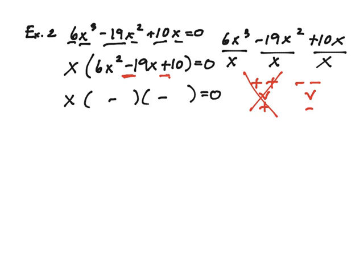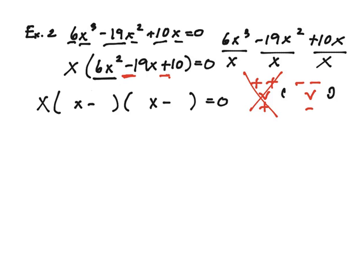So I have two negatives. Now let's look at 6x squared. Let's go ahead and split that x. I have a feeling that I'm not going to be able to fit things in. So I'm going to rewrite that. So I have x, and then x minus, and then I have x minus equals 0.